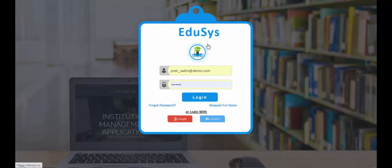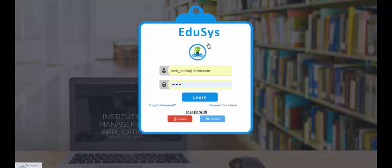Hello everyone, welcome to Educes. This video will help you understand the flow of the Educes preschool management software. Once the setup is done, you will receive login credentials — username and password — to your registered email ID or mobile number. If you don't receive the credentials, you can reach our support team or create your own password using the 'Forgot Password' option on the login page. Browse to www.educes.co/educes-preschool to open the login page and use the credentials to log in.